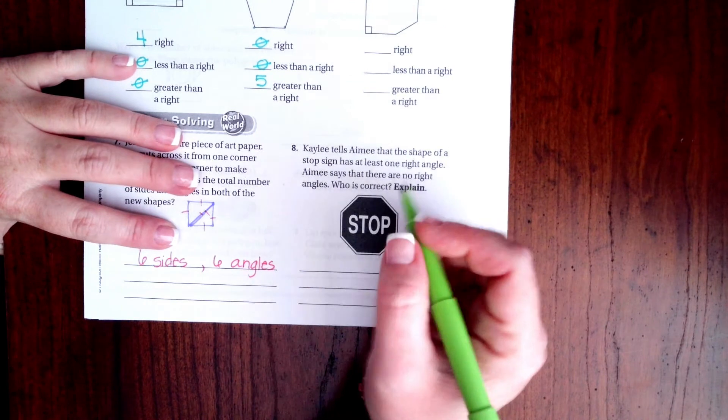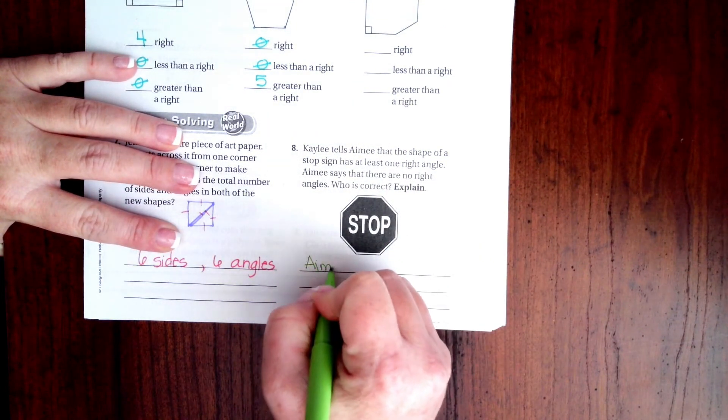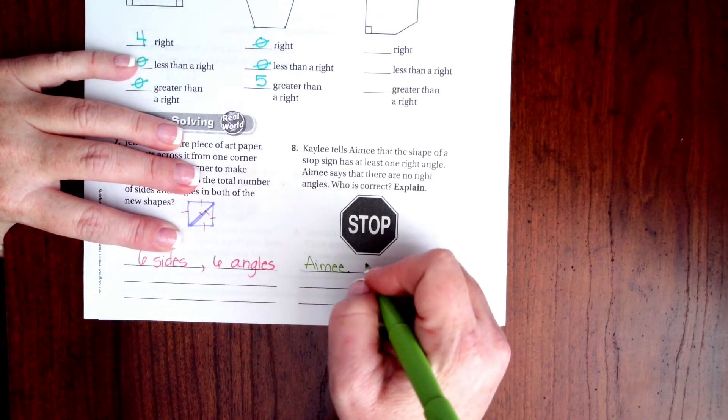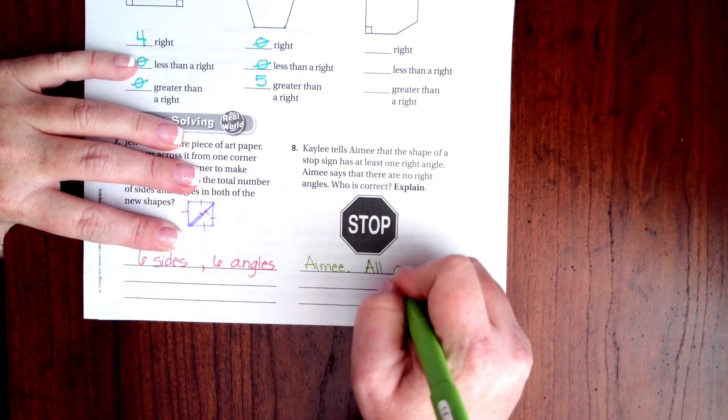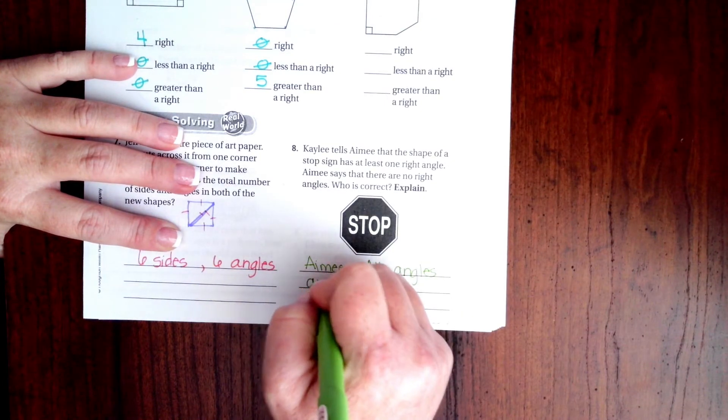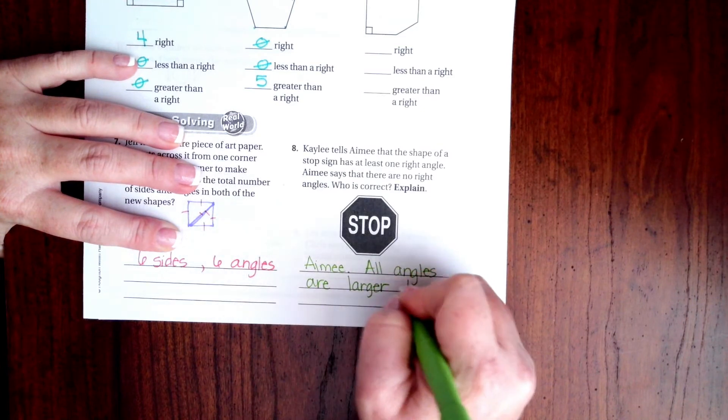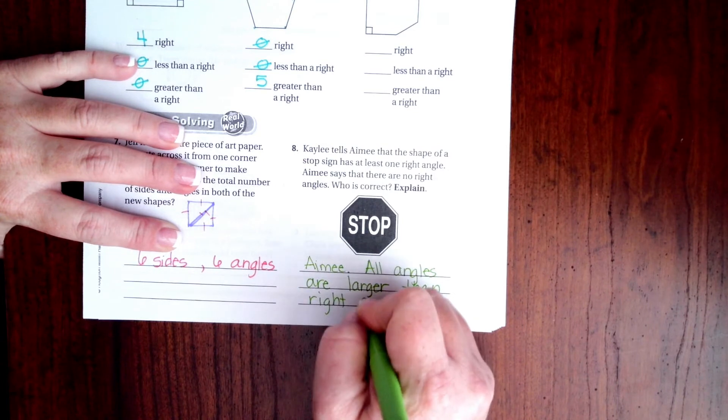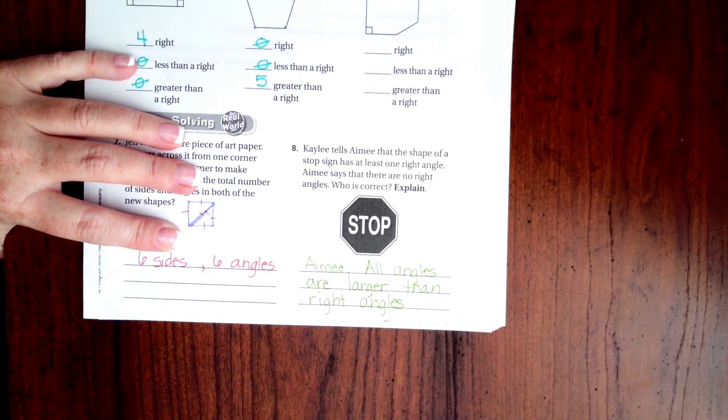Well, Amy's the one that said there were no right angles, so Amy is correct. All of the angles are larger or bigger than right angles. There we go.